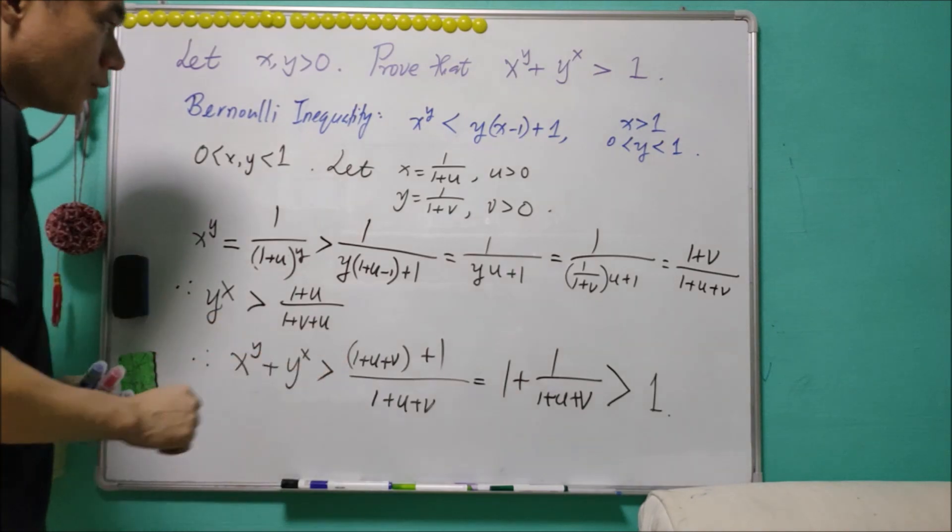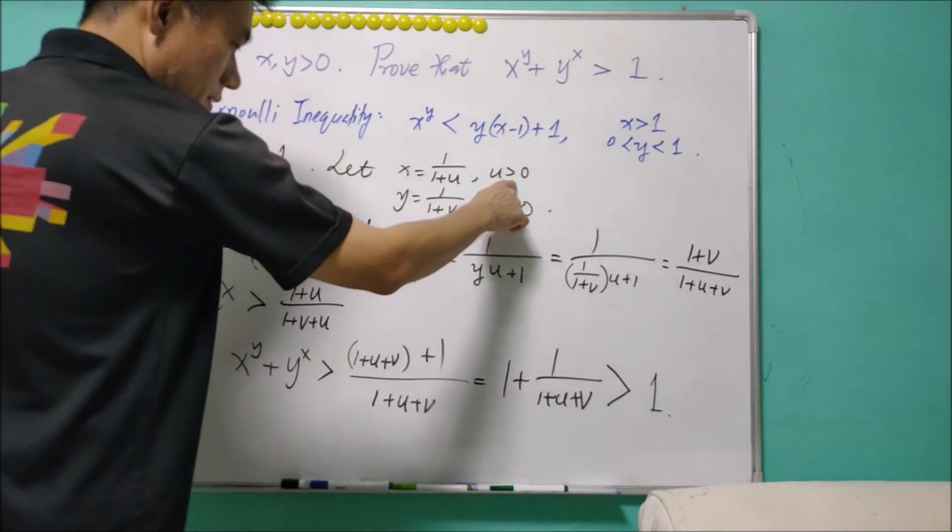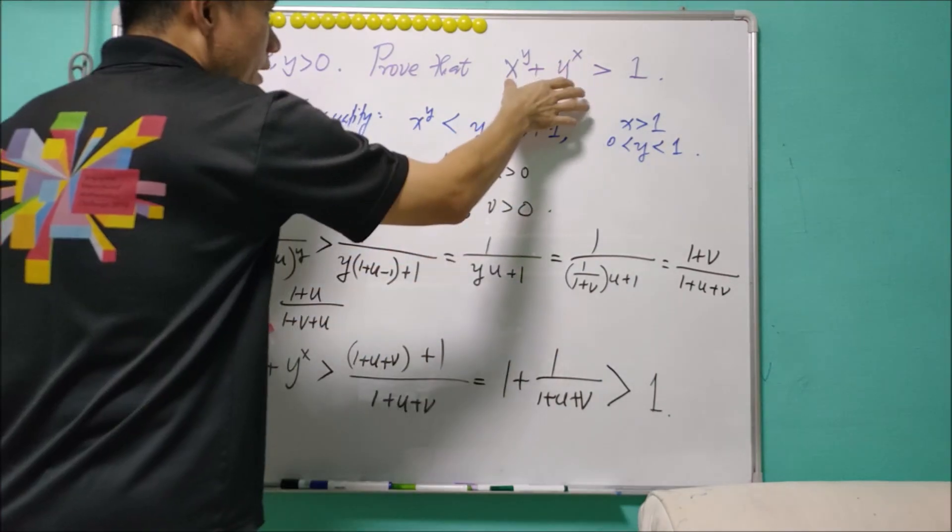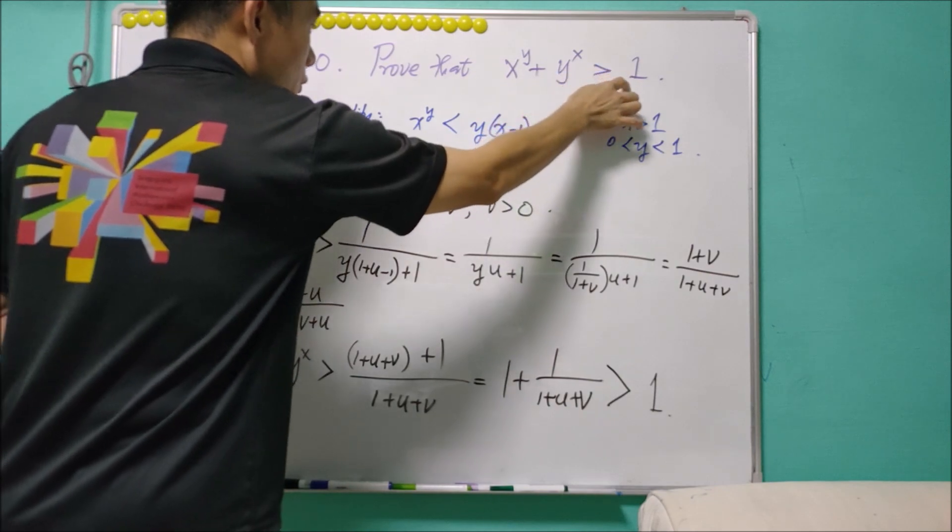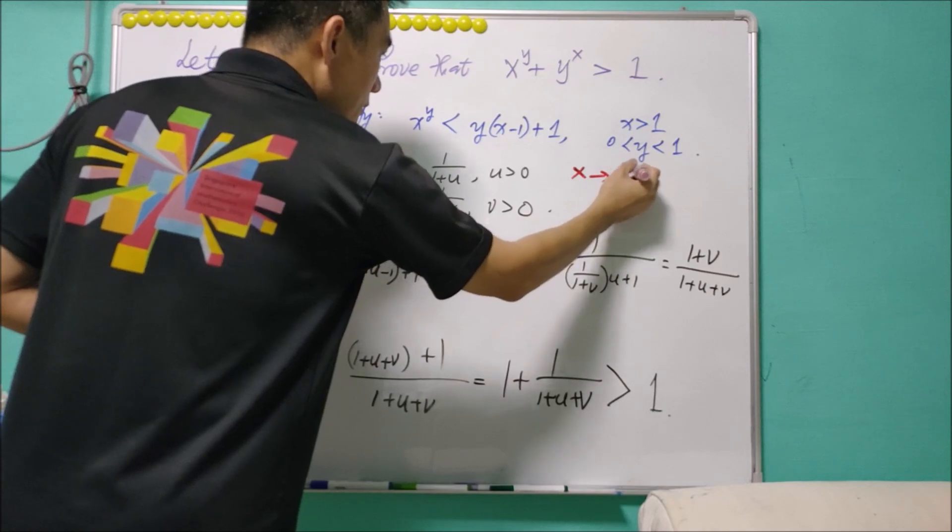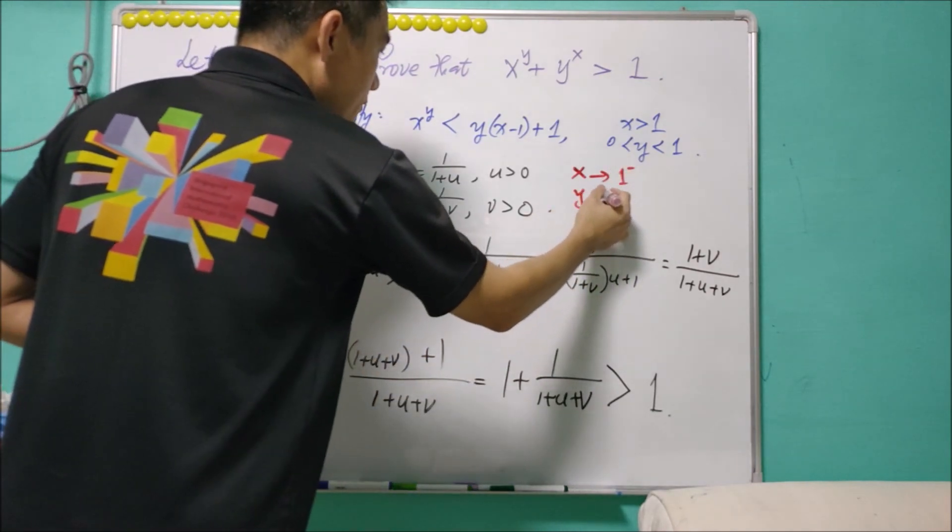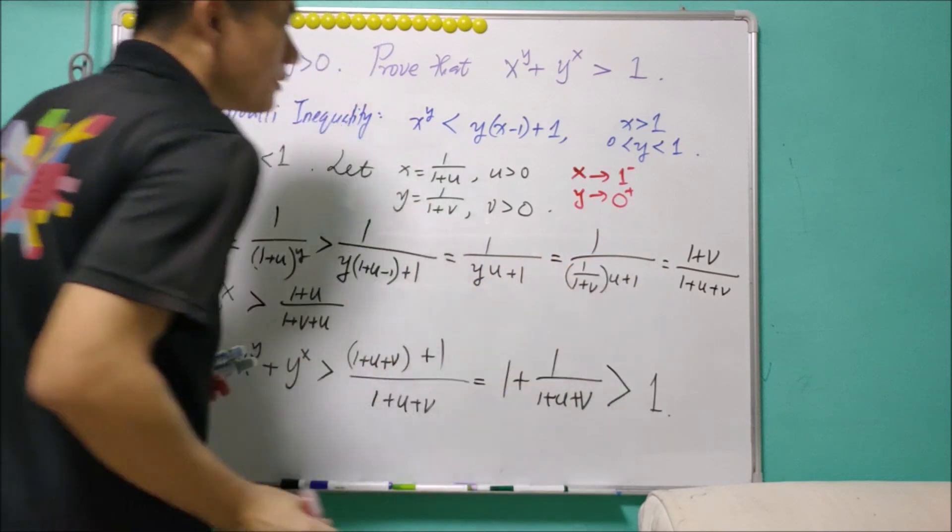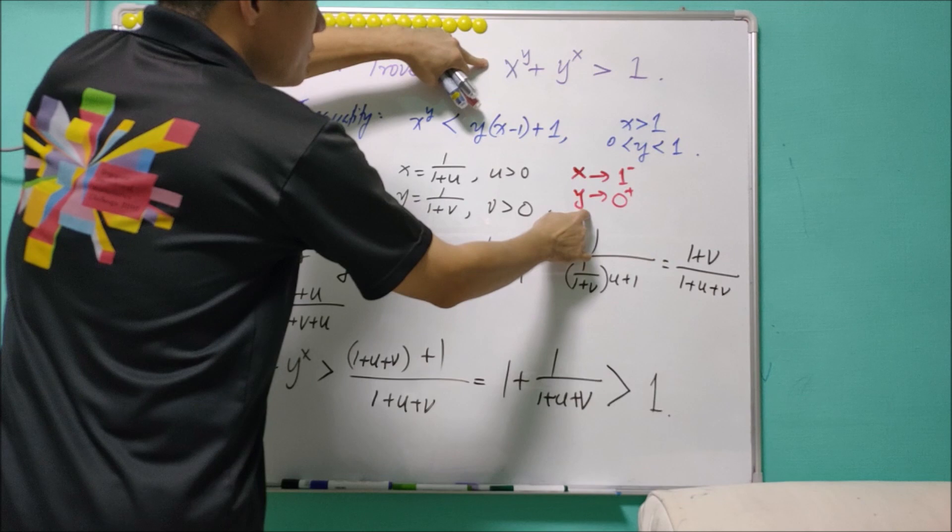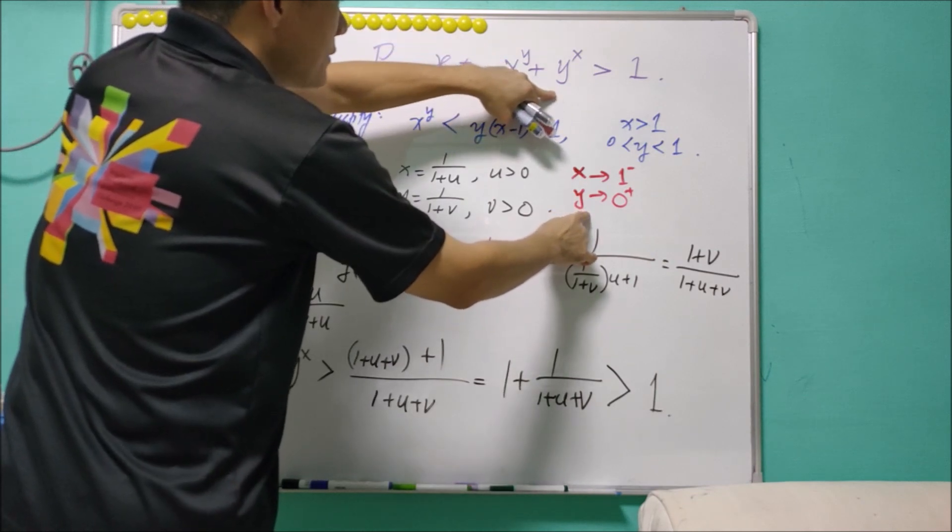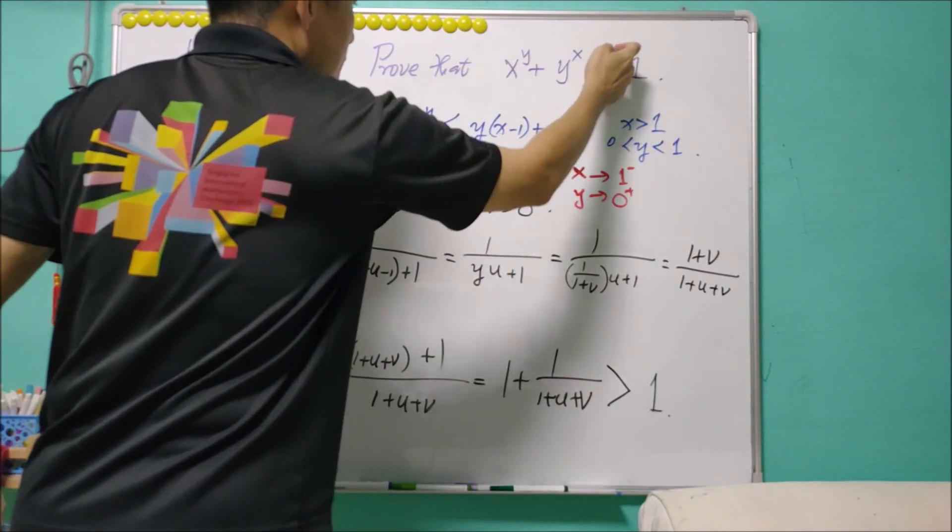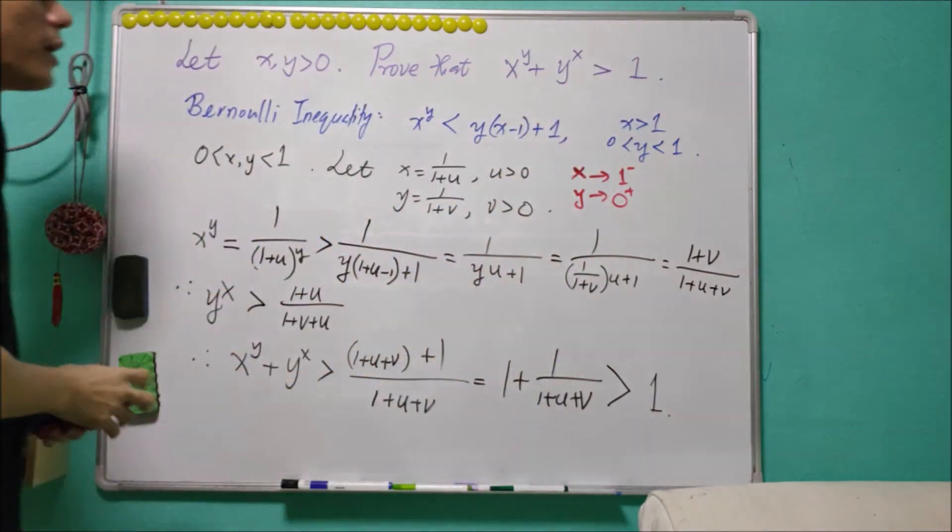The equality never holds because u is always positive. But we can always get this term to be very close to 1 by considering x very close to 1 negative and y is very close to 0 positive. And in this case, we will see that x to power y is very close to 1 and y to power x is very close to 0. And in that case, we say that this 1 is the best lower bound that we can have.